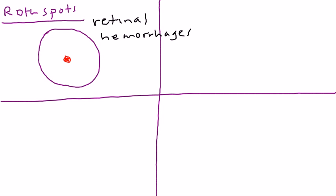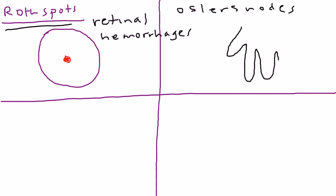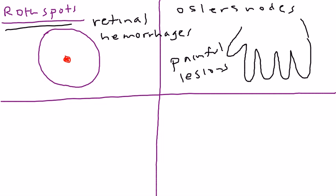This retinal hemorrhage can happen in endocarditis. It's usually either white or pale at the center, and when you do an eye exam you can notice this — it's given the special name Roth spot. The next one is called Osler's nodes, which are lesions on your hand that are painful, usually red and raised. They're pretty characteristic and definitely associated with endocarditis.